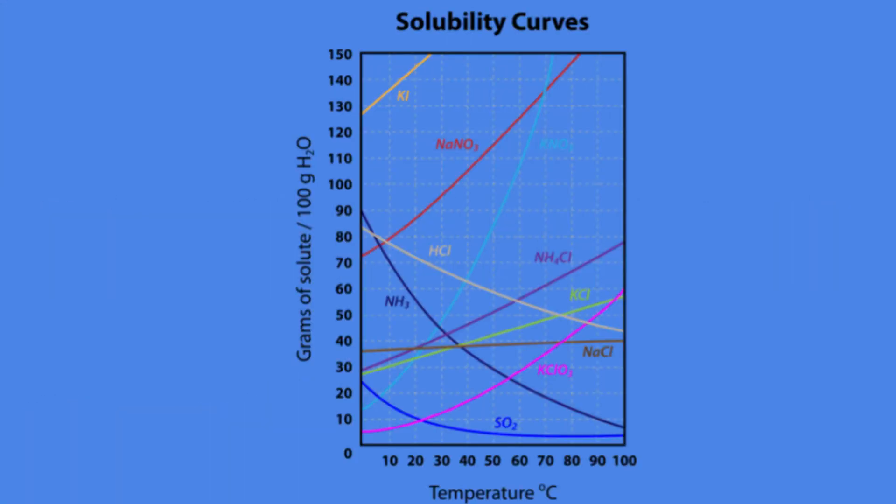When we look at this graph, it is giving us the amount of grams of a solute that is able to dissolve as the temperature increases. So what we need to do is line up our y and our x-axis to figure out how much of each solute dissolves.